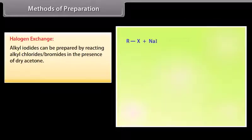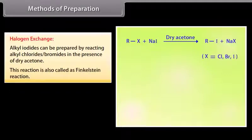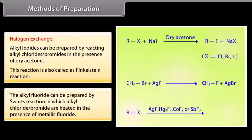Halogen exchange: alkyl iodides can be prepared by reacting alkyl chlorides or bromides in the presence of dry acetone. This reaction is also called the Finkelstein reaction. Alkyl fluorides can be prepared by the Swartz reaction, in which alkyl chloride or bromide is heated in the presence of metallic fluoride.